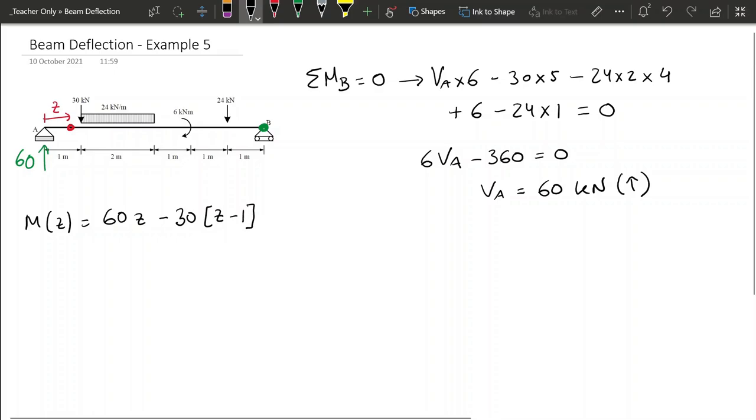When it's the case of the UDL, so we're going to do minus 24, because the UDL starts at z equals 1, we're going to still add a z minus 1, but since it's a UDL, we have to do squared and divide by 2.